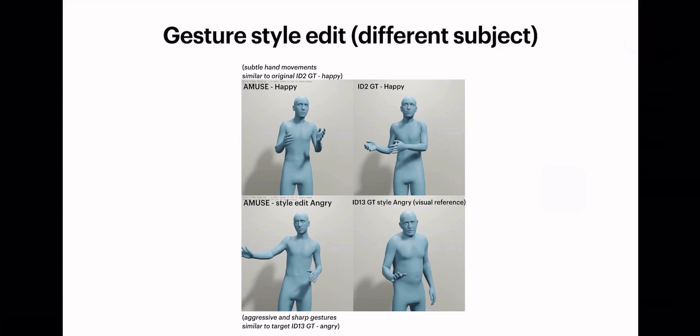Comparatively, GT Happy on the top right is paired with Amuse-generated content on the top left, showcasing visual similarities. Additionally, we reference the target subject's angry sequence in the bottom right, associated with a different audio. Here, Amuse adeptly produces gestures for an angry sequence in the target style, characterized by aggressive postures and squared shoulders, despite the input being a happy speech utterance.